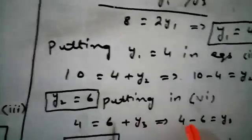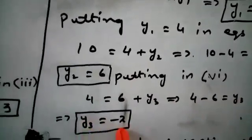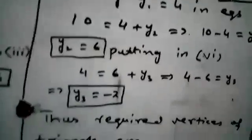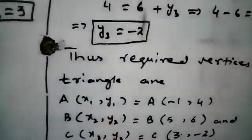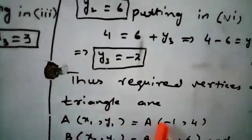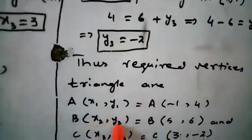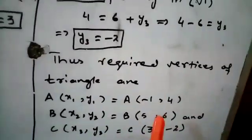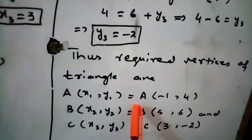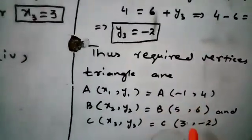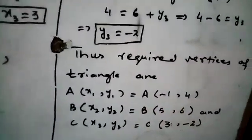Putting y2 = 6 into equation 4: 4 = 6 + y3, so y3 = −2. Thus the required vertices of the triangle are A(−1, 4), B(5, 6), and C(3, −2).